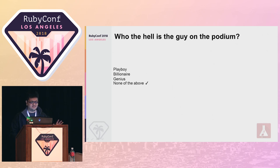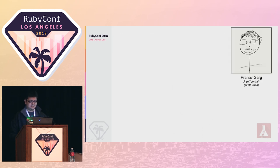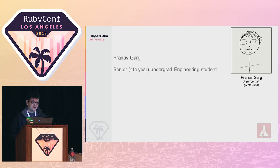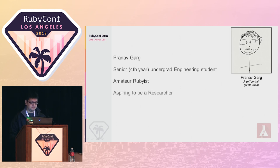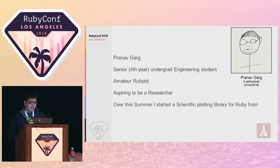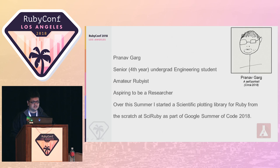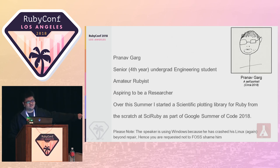You must be thinking, who the hell is this loud guy on the podium? Well, that was a trick question — the correct answer is none of the above. Though my mom says that I'm a genius. Let me introduce myself: I'm Pranav Garg. I am a senior year undergrad student from Bits Pilani, India. I am an amateur Rubist, and I'm aspiring to be a researcher in theoretical neuroscience and its conjunction with reinforcement learning. Over the summer, I started working on a plotting library from scratch at SciRuby because of Google's Summer of Code. There's a word of warning — please don't judge me.